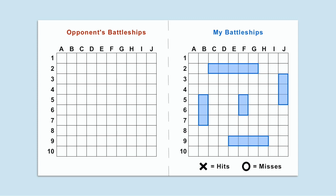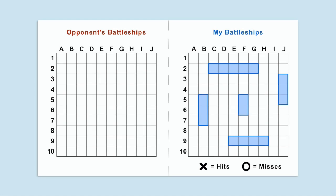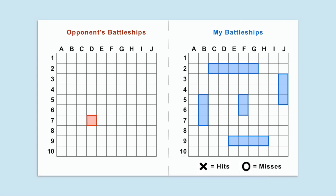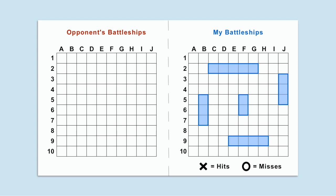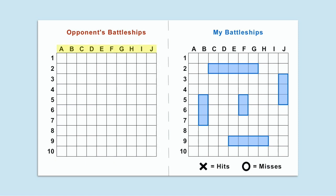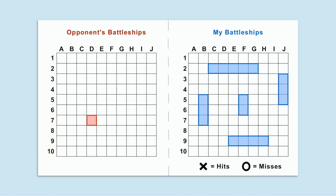After both players have set up their grids and placed their 5 ships, players are ready to begin. Pen and Paper Battleship is a game where players try to hit and sink all of their opponents' battleships by blindly guessing individual squares on the grid. One player will be the start player. The start player begins by naming a specific square — a letter on the horizontal axis and a number along the vertical axis. For example, to fire at a specific square, they would say D7.